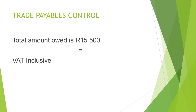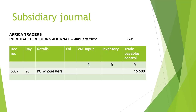In the purchases returns journal, the full amount owed by the business to the supplier, or in other words the creditor, is recorded in the Trade Payables Control column. The amount owed to the supplier was originally recorded as inclusive of VAT, and therefore the refund will also be recorded inclusive of VAT to reduce the total amount owed on the transaction to zero. Let's start recording the transaction in the purchases returns journal.